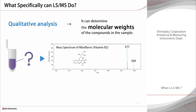So, in practical terms, what can LC-MS do? An LC-MS analysis provides information on the molecular weights of the compounds in the sample. For example, this is the mass spectrum of riboflavin. Two peaks are evident: one with a hydrogen ion adduct and one with a sodium ion adduct. From this information, it is evident that the molecular weight of riboflavin is 376.